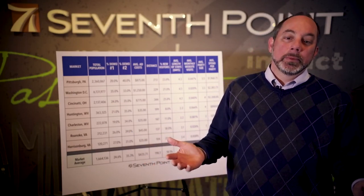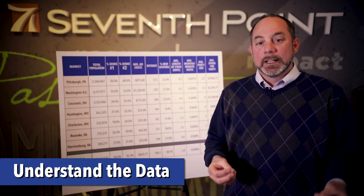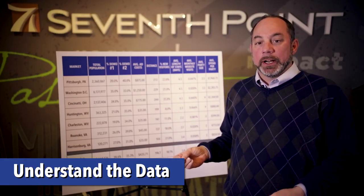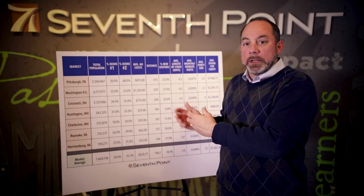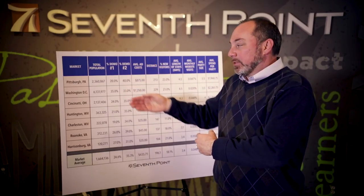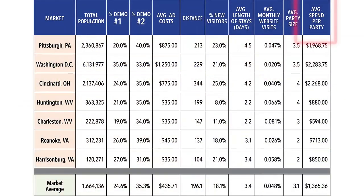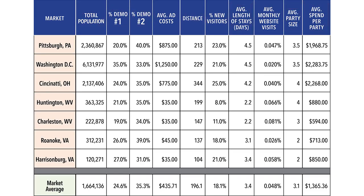Now that you know where your customers are coming from, you need to understand the data that your company has that tells you how each of these markets perform against each other. For example, we're taking a look at a destination marketer who gets customers from various cities. So we're looking at things like average spend per party, average party size, average length of stay, the distance away from each of these markets, the total population of these markets, and of course the demographic percentage of your target audience in each of these cities. These data points tell us how valuable each of these markets are, especially in comparison to each other.